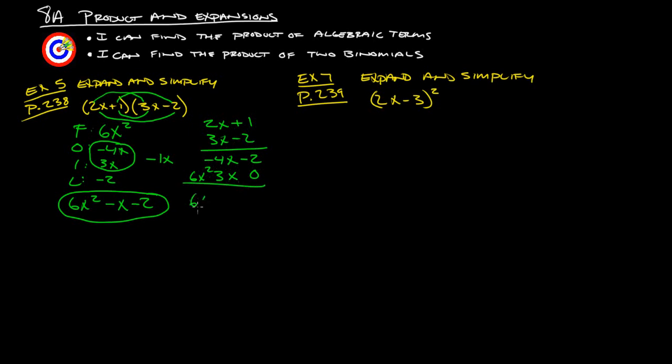Add the like terms, so that's 6x squared. Negative 4x and 3x gives us negative 1x. And then negative 2 and 0 gives us negative 2. So we get the same thing here as here. And then last one, example 7 from page 239. We get 2x minus 3, the quantity squared.